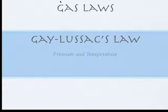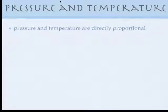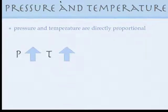Gas laws. This is Gay-Lussac's law, and this is the last one about pressure and temperature. We've looked at volume and pressure, and we've looked at volume and temperature. Now the volume is constant, so we don't need to worry about the volume. Gay-Lussac's law basically says that pressure and temperature are directly proportional, so if pressure goes up, temperature also goes up, and vice versa — if pressure went down, temperature would go down.